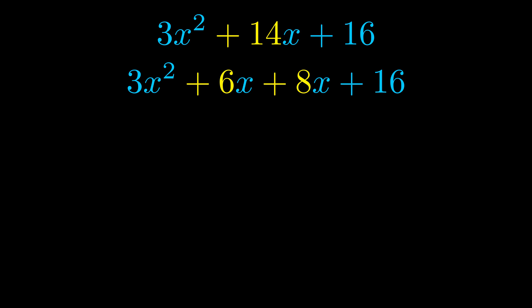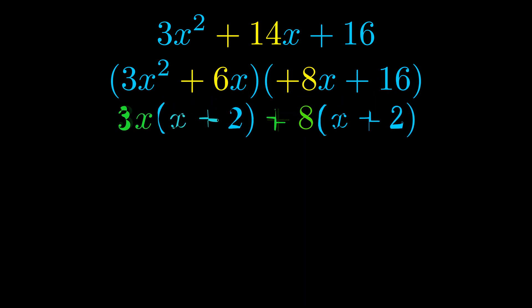Once we've done this, we go ahead and put parentheses around the first term and the last term. And we do that so we can take the greatest common factor out of both terms. We can see the greatest common factor is now outside in green.